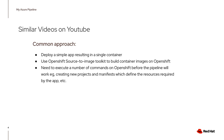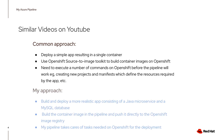I want to do things differently. First, I'm going to build and deploy a more realistic app consisting of a Java microservice and a MySQL database. Two, I want to build a container image in the pipeline and push it directly to the OpenShift image registry. And three, my pipeline takes care of all the tasks needed on OpenShift for the deployment, so you don't have to do all this preparation work on OpenShift before executing the pipeline.